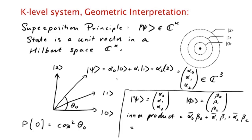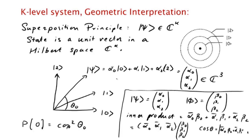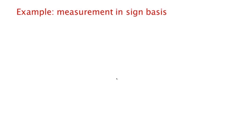And we can define the angle between these two vectors by saying that cos θ is the magnitude of the inner product. If these are complex numbers, it's not the absolute value in the real sense — it's the magnitude of the complex number.